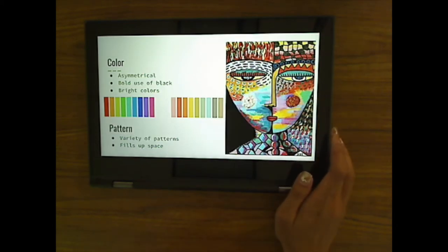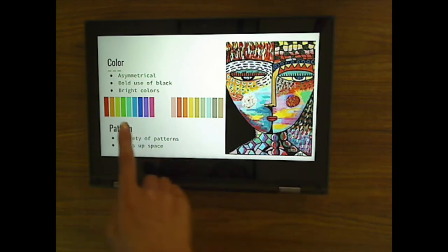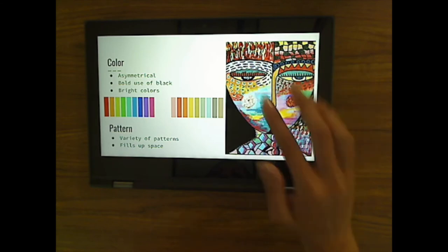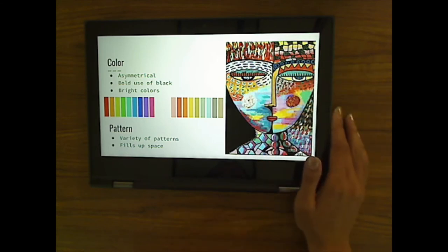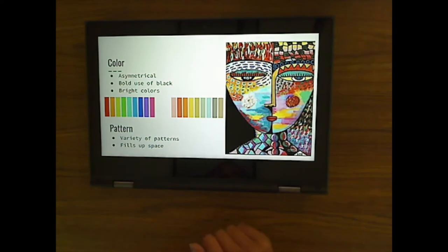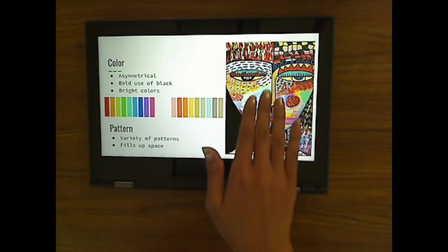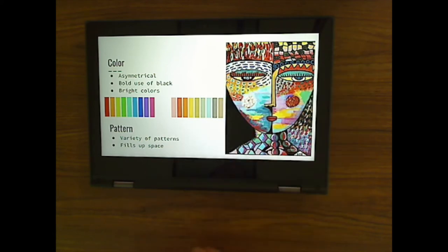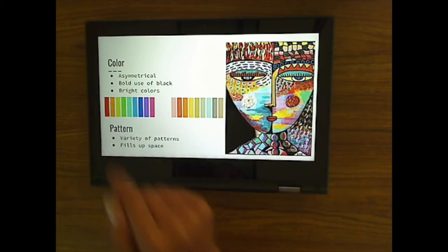You can see her use of color. Again, her use of color is asymmetrical. That means different colors on both sides. Okay, so she doesn't paint just orange on one side and then orange again on the other side. She uses blue on one side, green on another side, orange on one side, red on another side. So that's asymmetrical. It's not the same colors on each side.